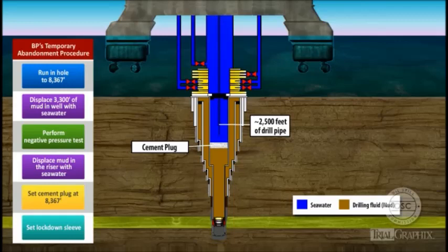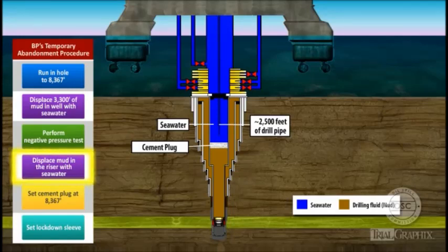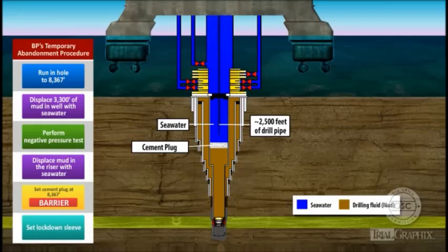And because they preferred to set cement plugs in seawater, they would replace the mud in the well with seawater first. As a result, BP created a procedure in which the crew would displace 8,367 feet of mud in the well with seawater before installing any additional barriers.